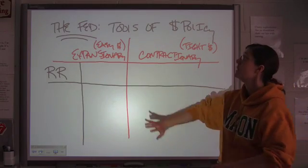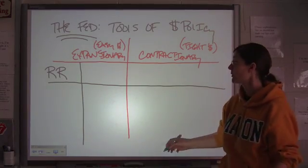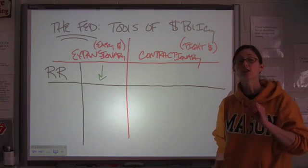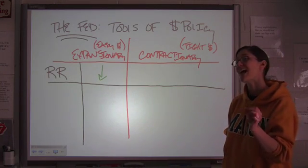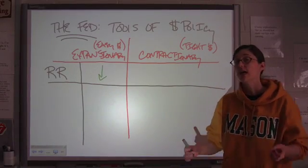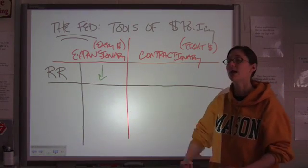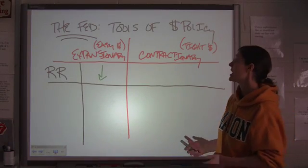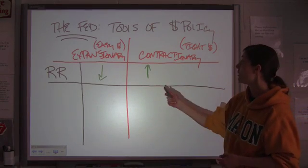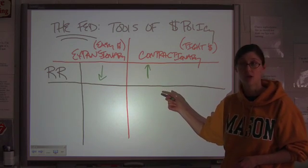If the Fed wants to expand or increase the money supply, what can they do with the reserve requirement? Well, they lower it. What that means is if they're lowering the reserve requirement, then money that has been required reserves suddenly becomes excess reserves — meaning above and beyond what they had to hang on to, now it's extra. It's those extra reserves that the bank can use to make loans. So lowering the reserve requirement puts more money available in banks that they can actually play with. If they want to contract the money supply, then they would raise the required reserves, because that takes the bank's excess reserves and makes them required, so you have less to play with.